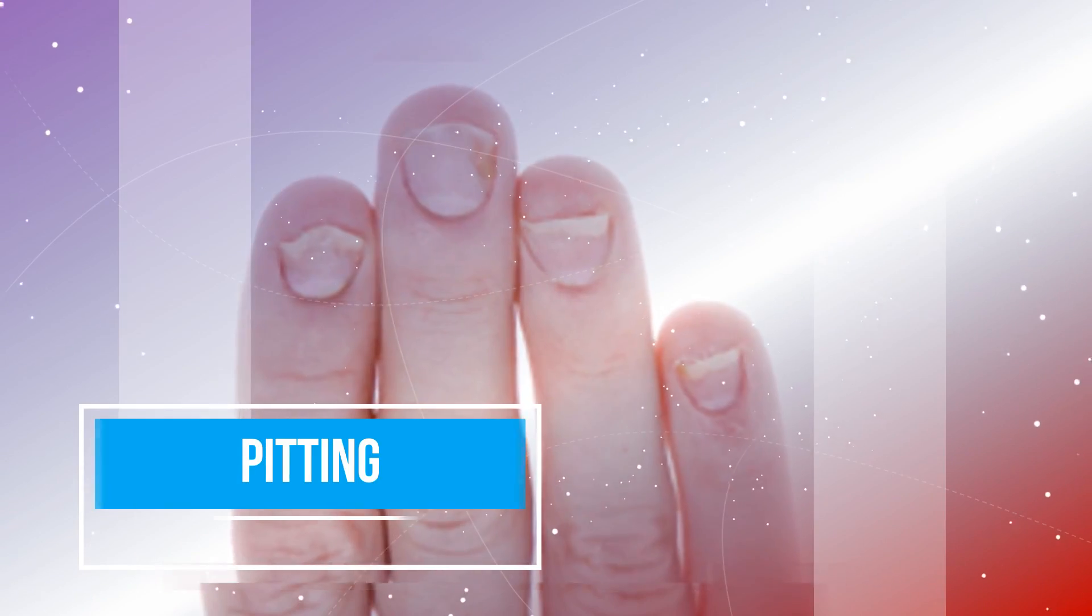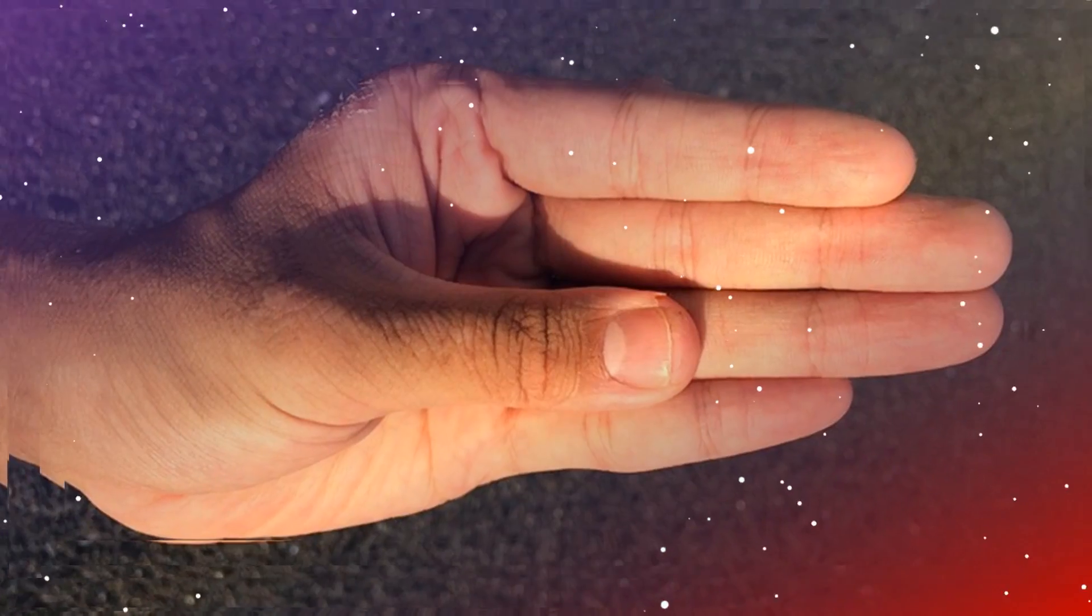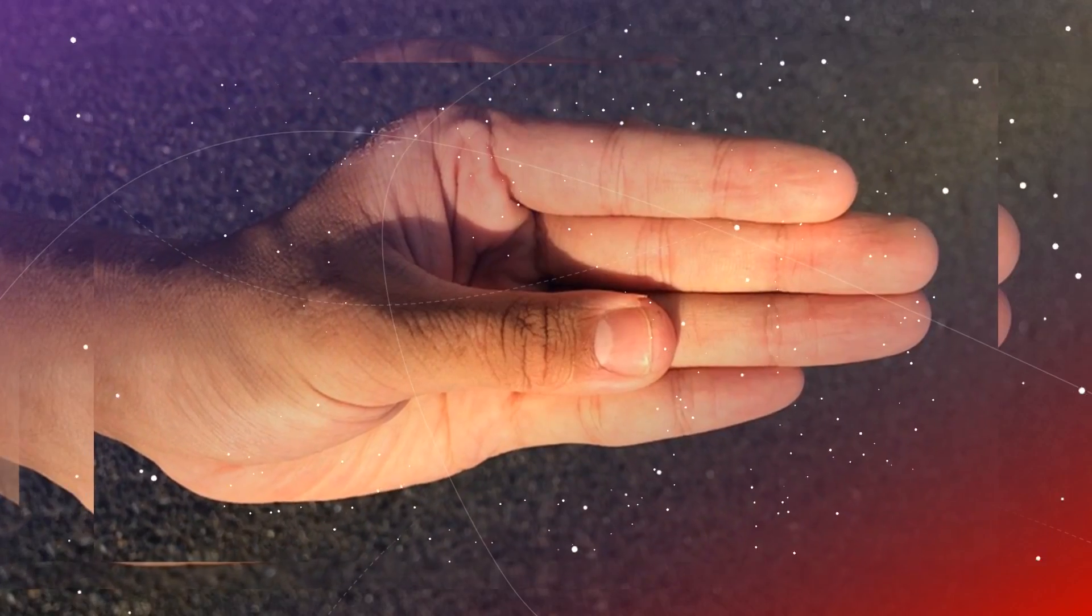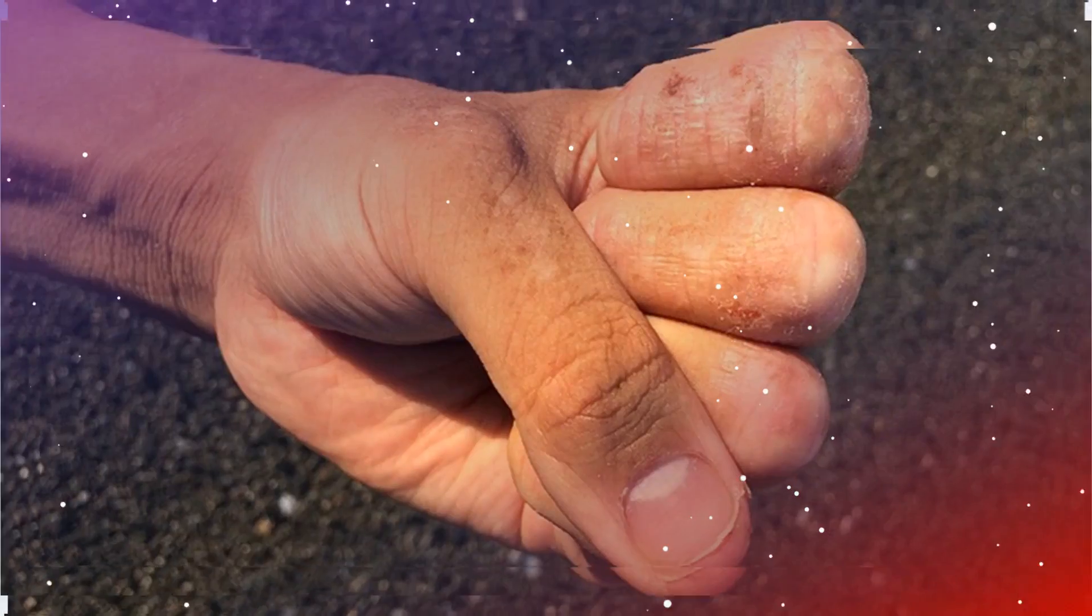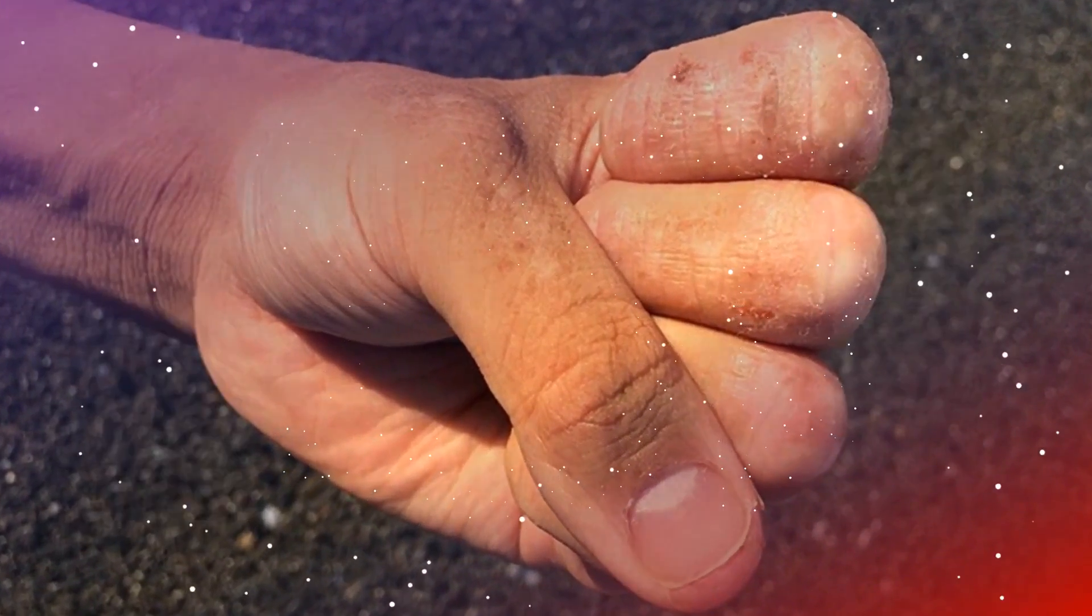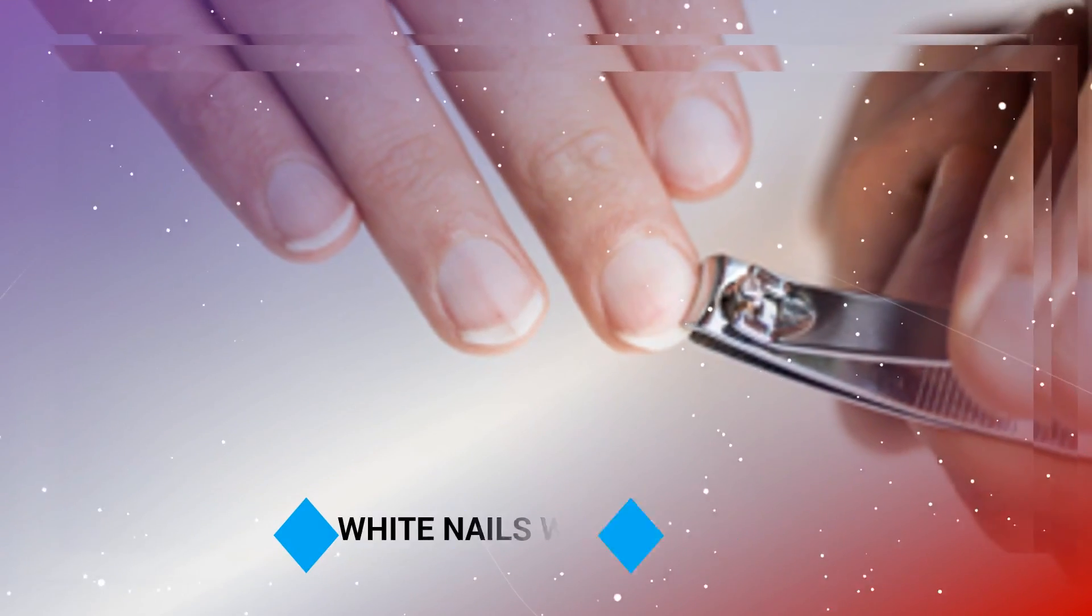9. Pitting. If your nails have multiple pits or dents, it's often a sign of psoriasis. This nail pitting may also be due to connective tissue disorders, including Reiter's syndrome, or alopecia areata, an autoimmune disease that causes hair loss.